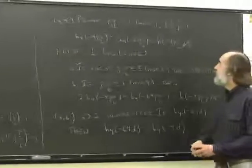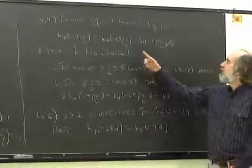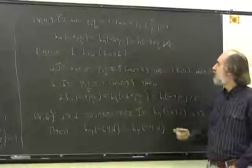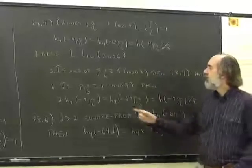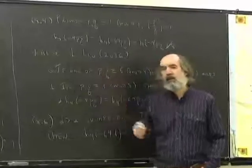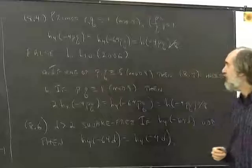And here is conjecture 8.4 for distinct primes pq congruent to 1 mod 4, p of square mod q is this equation. However, this conjecture is false. The counterexample was given by Liu in 2006.